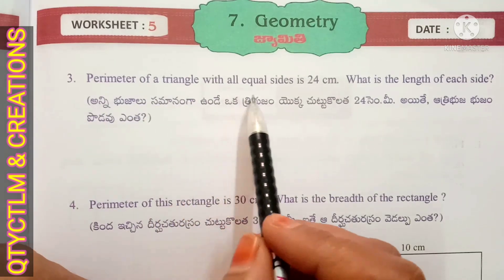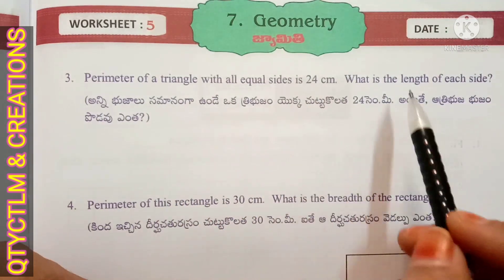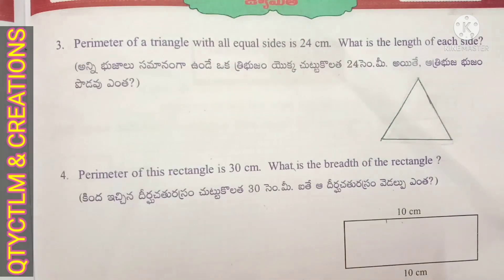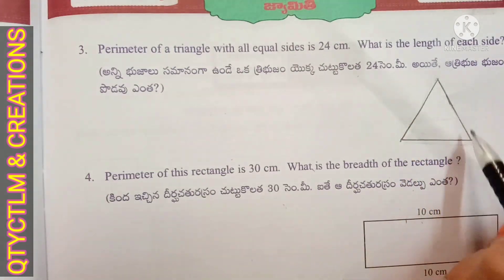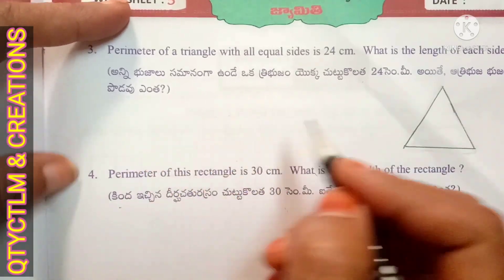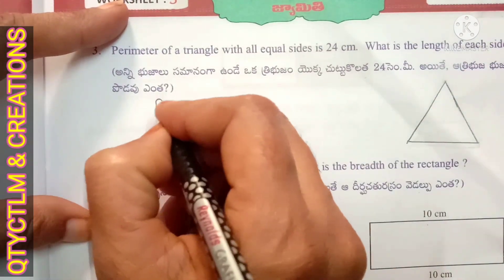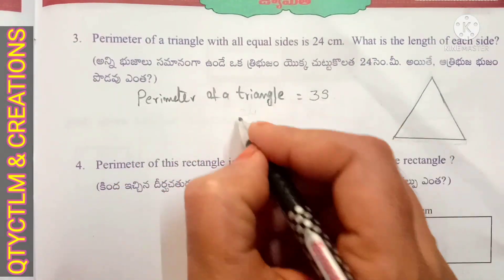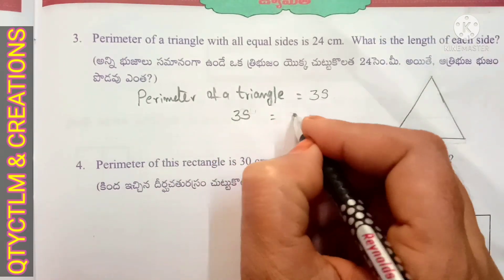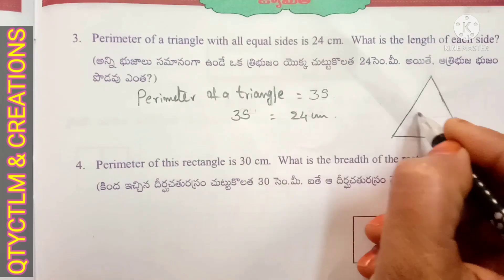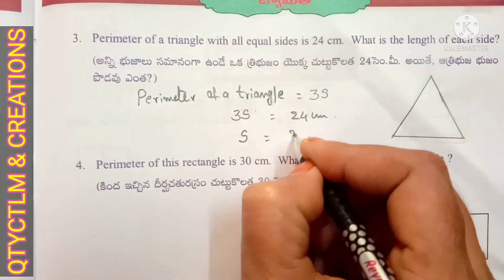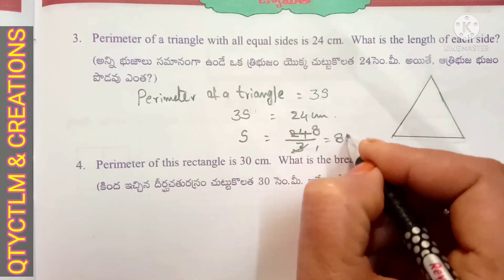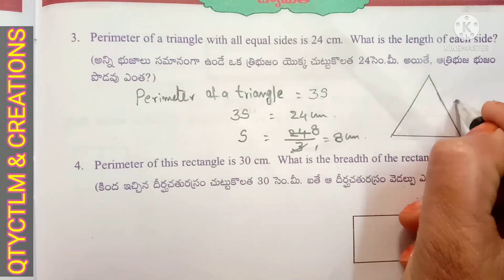Next question: perimeter of a triangle with all equal sides is 24 centimeters, what is the length of each side? This is a triangle with all equal sides, so perimeter of a triangle is equal to 3 sides — 3s equals 24 centimeters. One side is 24 divided by 3 — 3 eights are 24 — so one side of the triangle is 8 centimeters.